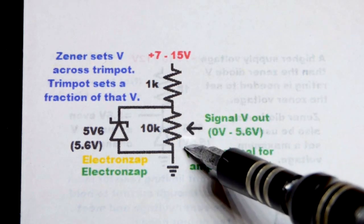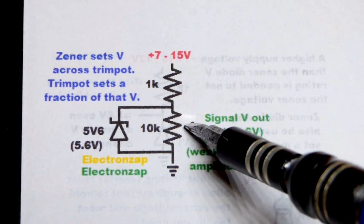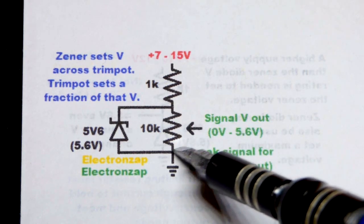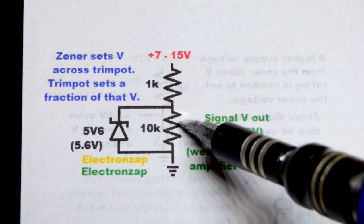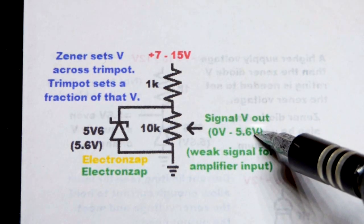That means that if we turn the wiper all the way to ground so that the arrow is pointing to the ground, which is moving the resistive element, the wiper I should say, across the resistive element all the way to the end to ground, then we'll have zero volts. If we turn it all the way to the positive supply, we'll have 5.6 volts in this case.